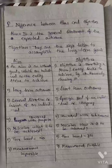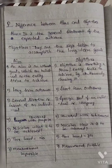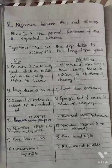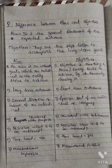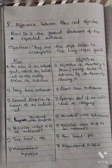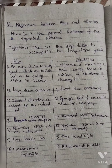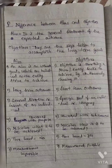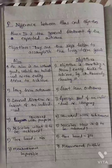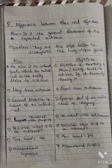The next question is the difference between aims and objectives. Aim is the general statement of the expected outcomes, where objectives means they are the steps taken to accomplish the long-term goals.